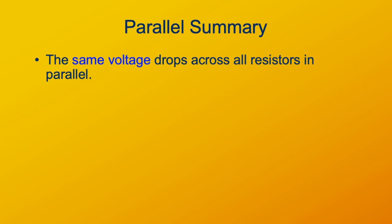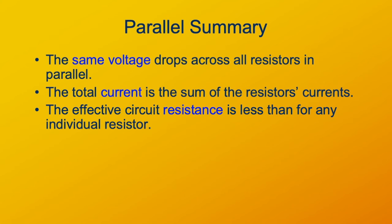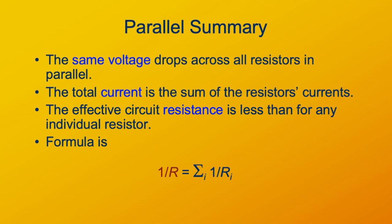When resistors are wired in parallel, there is the same voltage drop across all of them. The total current is the sum of the individual resistors' currents. The effective resistance of the circuit is less than the resistance of any individual resistor — so as you add more resistors in parallel, the total resistance drops. A simpler way to think about it: more resistors in parallel means more pathways for charges to flow, so total current goes up. The formula is: 1/R_total = 1/R1 + 1/R2 + 1/R3.